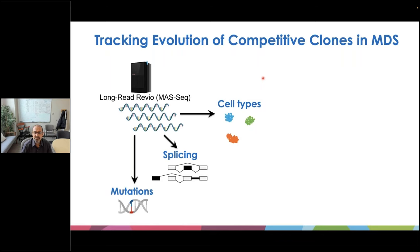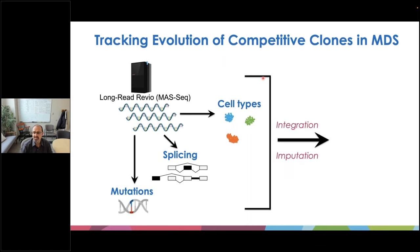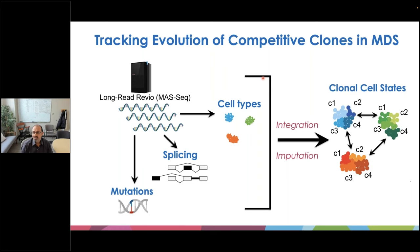One possible way to do this is with new multimodal single-cell assays such as MOS-Seq, which Liz introduced. These assays enable you to simultaneously profile mutations in individual cells in an unbiased manner, alternative splicing, and cell states. This approach should enable us to impute clonal cell states from diverse data sources. To understand if this is possible, we collaborated with scientists at PacBio to leverage the new MOS-Seq kit with standard 10X Genomics single-cell profiling and long-read Revio sequencing applied to a single MDS patient at multiple therapy time points.